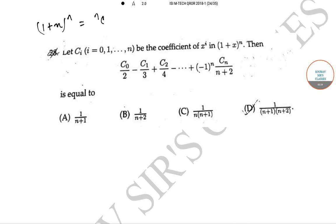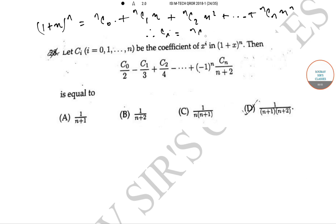We know that (1 + x)ⁿ = nC₀ + nC₁·x + nC₂·x² + ... + nCₙ·xⁿ, therefore Cᵢ = nCᵢ. Now let n = 2, then C₀ = 2C₀ = 1.